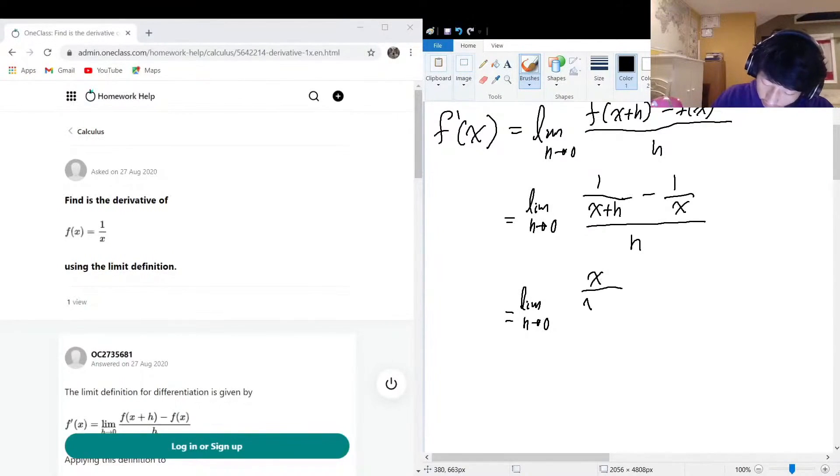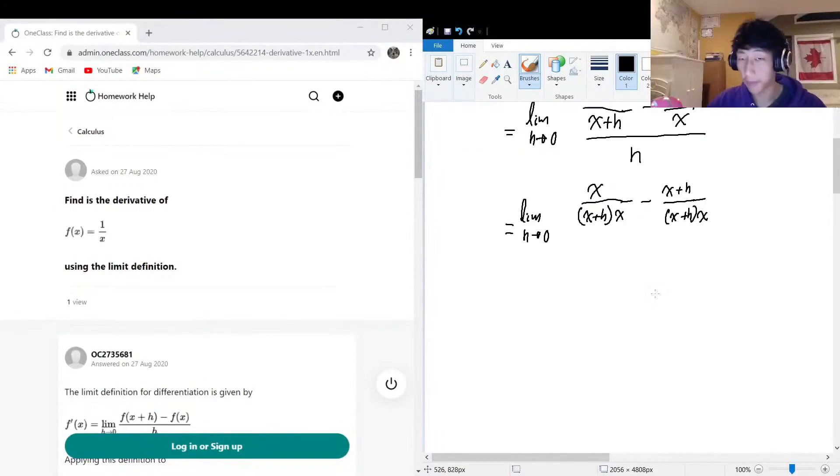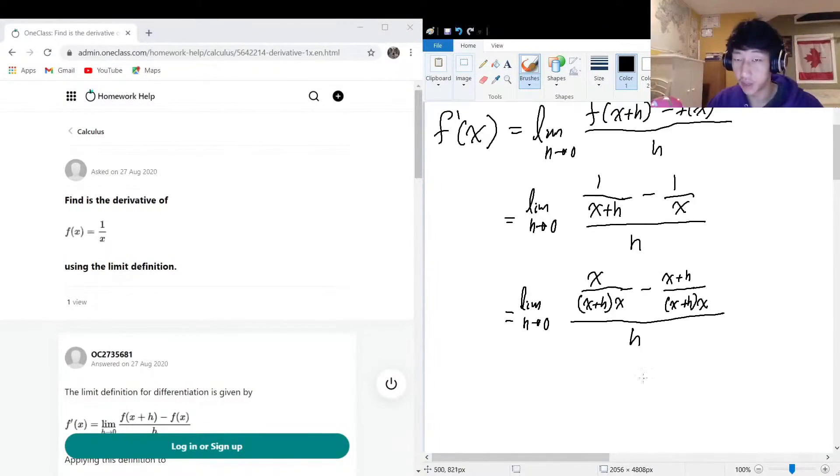x over x plus h, and that's x minus x plus h, all over x plus h times x. Okay, and this whole thing divided by h. What I did here is I just did a cross multiplication on the terms here.